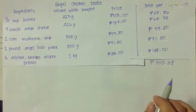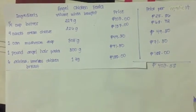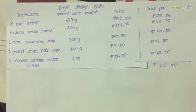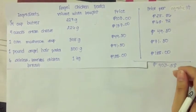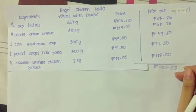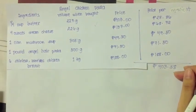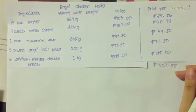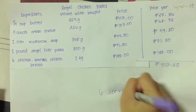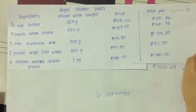This is the finished table with computed amounts per ingredient. To find the price per serving, we add everything in the price per ingredient column. In this case, the total amount is P403.58. But this is not yet the final amount per serving — we still need to divide it by how many servings the recipe makes. Our recipe makes up to 6 servings, so P403.58 divided by 6 results in P67.28.